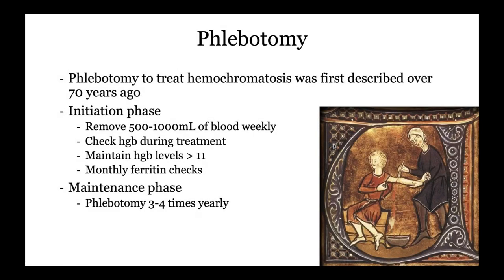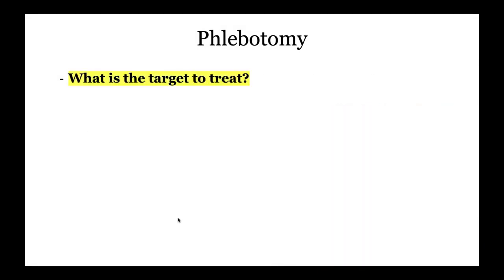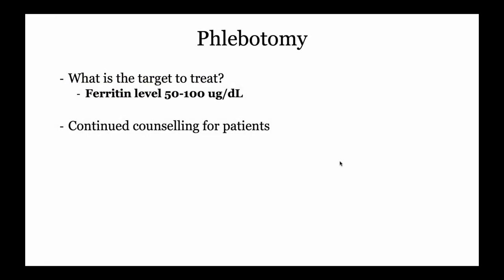The mainstay of treatment is phlebotomy, described more than 70 years ago. There is an initiation phase and a maintenance phase. In the initiation phase, you remove about 500 to 1,000 mL of blood weekly, depending on patient tolerance. Check hemoglobin and maintain a level of 11, and do monthly ferritin checks. Once in the maintenance phase — once ferritin is controlled — you do phlebotomy about three to four times yearly. The target ferritin is 50 to 100. Once you reach that target, you move to maintenance and continue counseling.